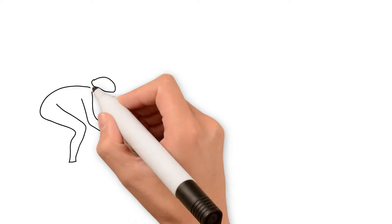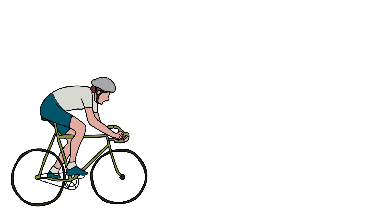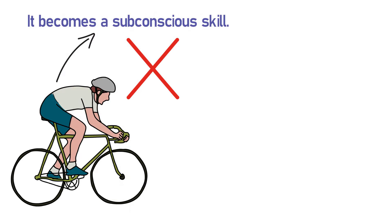Think of it this way: learning to ride a bike takes conscious effort at first, but once learned, it becomes a subconscious skill. You can do it without consciously thinking about it.